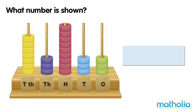What number is shown? Let's count the beads in each place of the place value abacus. Let's start with the highest place value. In the tens thousands place, there are seven beads. In the thousands place, there are three beads. In the hundreds place, there are nine beads.